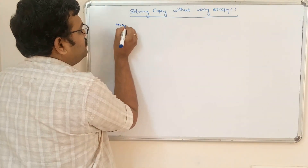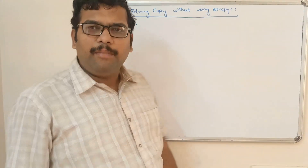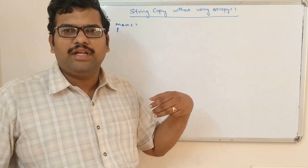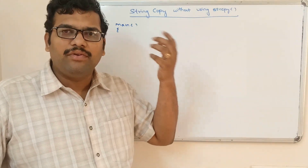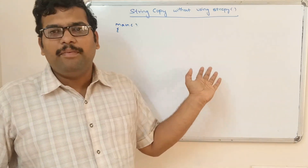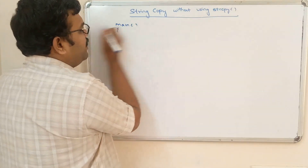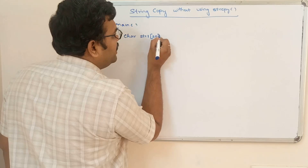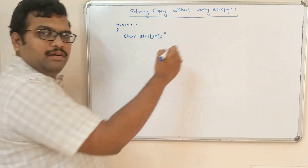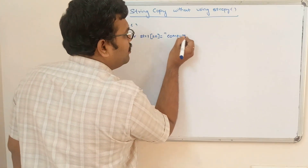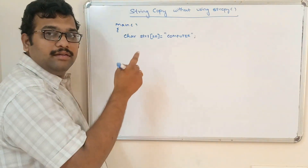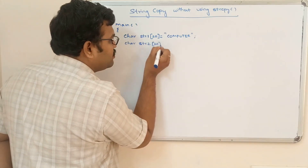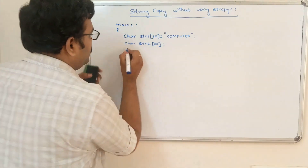If we use the strcpy function, the logic is handled internally and the content is directly copied. Here, we have to write the logic ourselves — taking each character and copying it to the second string. So first, declare two strings: char str1[20] = "computer" as a direct initialization, and declare another string str2 without initialization, plus int i.